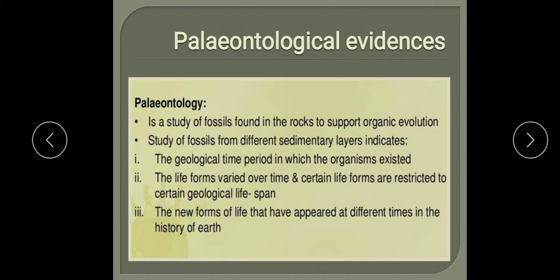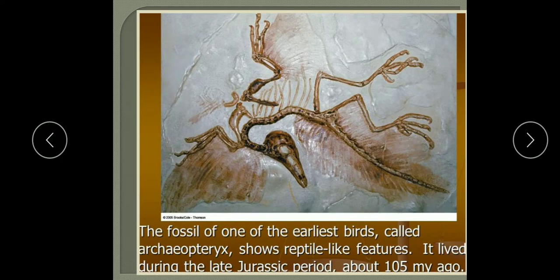Paleontology helps us know the geological time scale. One important fossil example is Archaeopteryx, discovered by Andreas Wagner in 1861 from Bavaria, Germany, from rocks of the Jurassic period. Archaeopteryx represents an important connecting link between reptiles and birds — it shows both reptile-like and bird-like features. This clearly suggests that birds evolved from reptiles, and it lived during the late Jurassic period about 105 million years ago.